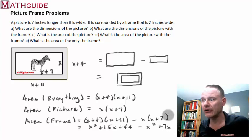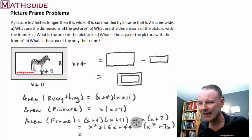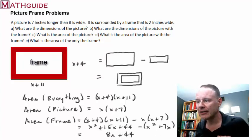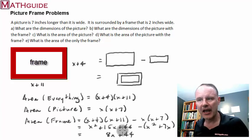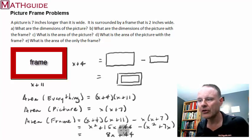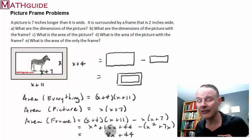I gotta subtract all of that. So you gotta be careful there. So x squared subtract x squared, x squareds cancel. 15x minus 7x, that's going to give you eight x. And then 44 minus nothing, well that's just 44. So there you go. This would be the expression. I mean, there's many ways that you could express this area of just the frame. You could either use this complicated looking expression or you could do this simplified expression and either of the two are correct.